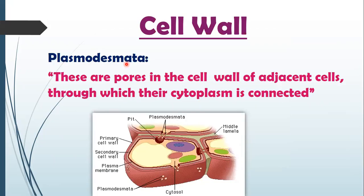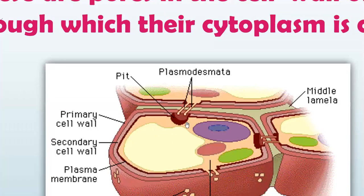Let's look at plasmodesmata. These are the pores in the cellulose of adjacent cells through which their cytoplasm is connected. These are cytoplasmic connections between two cells. Chemical material can move from one cell to another through these cellular junctions called plasmodesmata. These openings are there because the cell wall is hard, thick, and tough — nothing can move through it — so plasmodesmata are created to maintain connections between two cells.